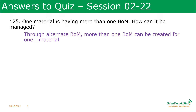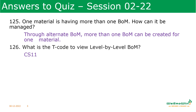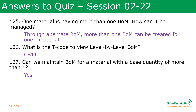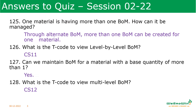If one material has more than one BOM, how can it be managed? It can be managed through alternate bill of material — we can use alternate BOM 1, 2, 3, and so on to handle any number of BOMs. What is the t-code to view level-by-level bill of material? CS11. Can we maintain BOM for a material with a base quantity of more than one? Yes, it is possible. What is the t-code to view multi-level BOM? CS12.